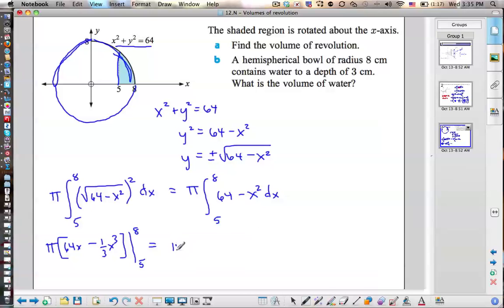Okay. So let's plug in eight. So pi. 64 times 8. 512. Minus eight cubed. Divide by three. What's that? All right. That gives me 512 over three.